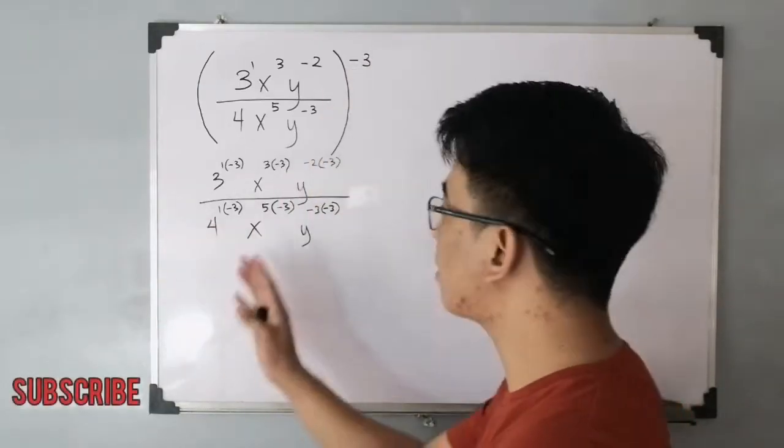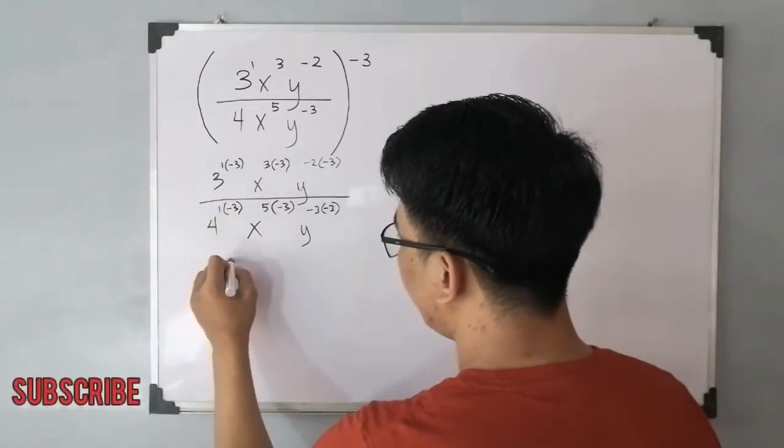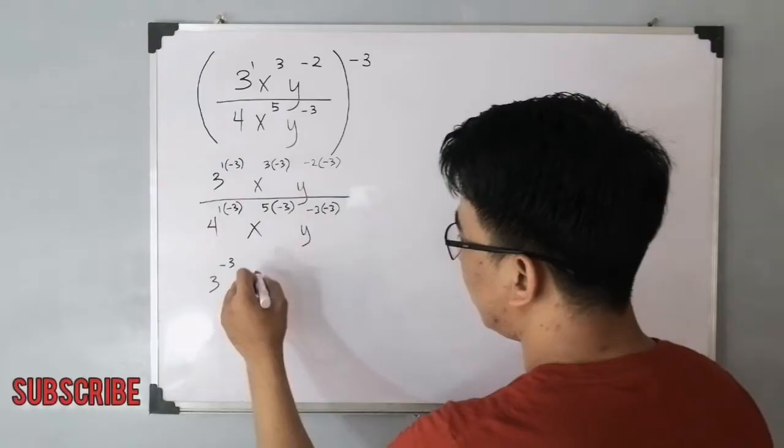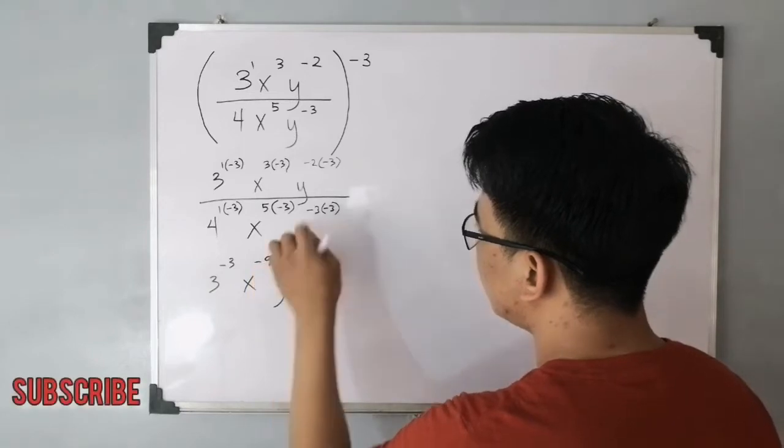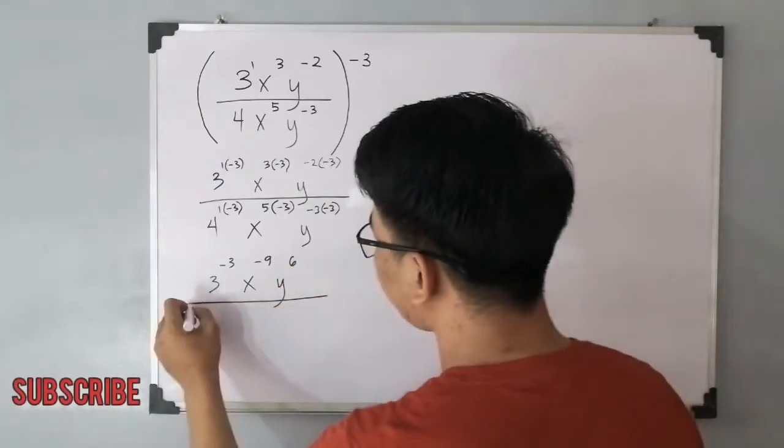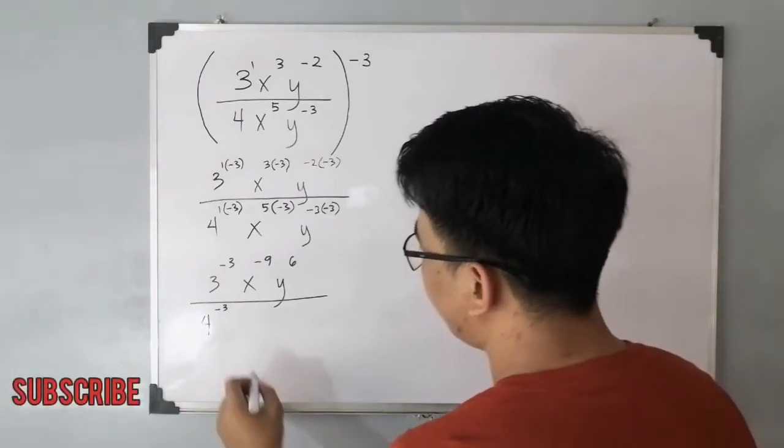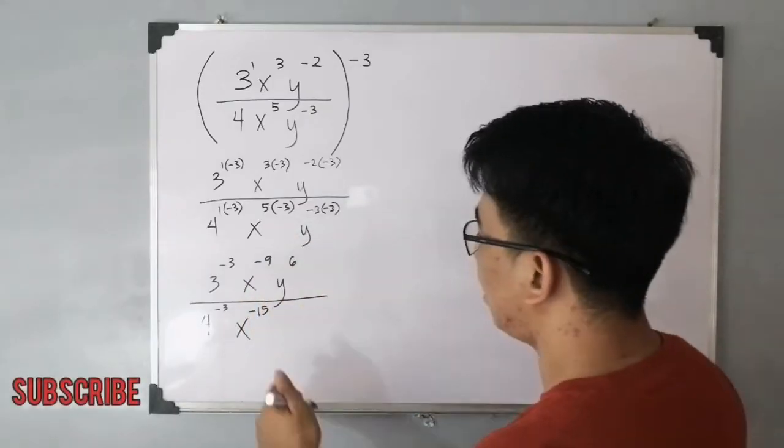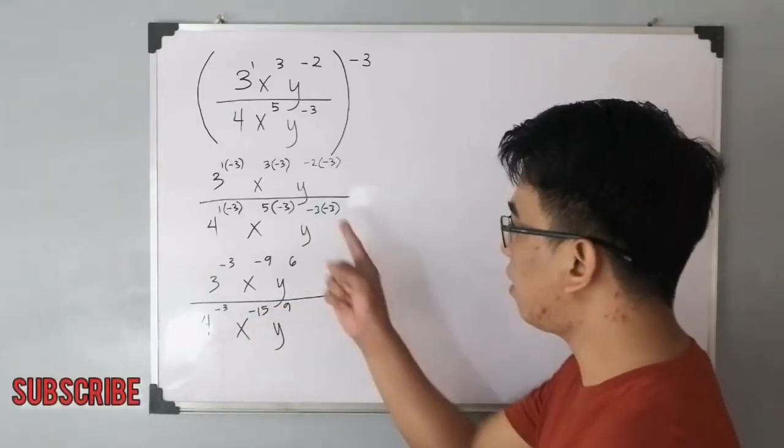And simplifying these exponents, magbigay sa atin 3 raised to negative 3. Then for the x, you have 3 times negative 3, that is negative 9. And then for the y variable, you have y raised to 6, kasi parehas silang negative. You have negative 2 times negative 3, over 4 raised to negative 3. For the x variable, you have x raised to negative 15, because we have the exponents of 5 times negative 3. And for the y variable, you will get the exponent of 9, negative 3 times negative 3.